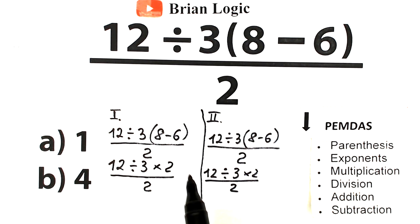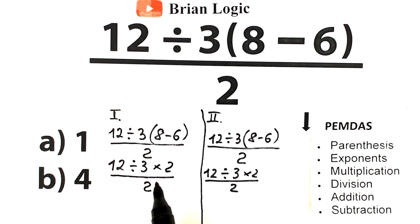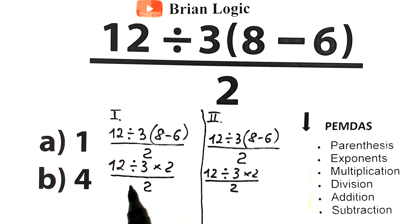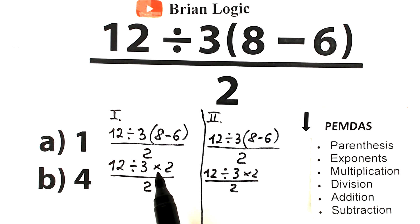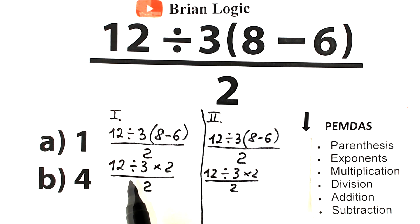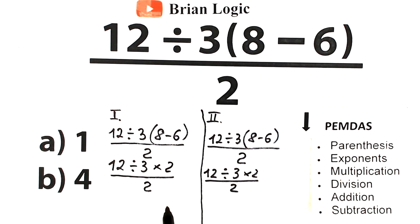Now we have the division-multiplication part, and this is a really important moment because this is where the debate starts. People all over the world argue about the correct order — should we divide first or multiply first? According to the order of operations, division and multiplication have the same precedence, so the correct approach is to evaluate them in strict order from left to right.